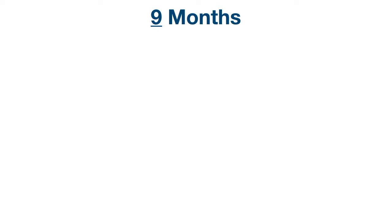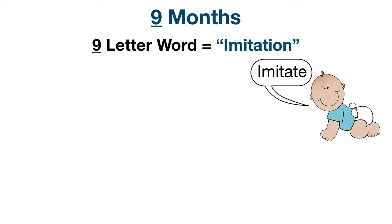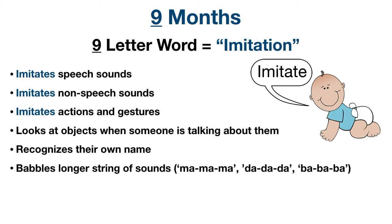Moving on to nine months — the nine-letter word to remember is 'imitation.' This is the start of the baby's imitation phase: they imitate speech and non-speech sounds, actions, and gestures. They may gesture by pointing to objects and showing them to others. They look at familiar objects when someone talks about them, start to recognize their own name, and their babbling increases with longer strings of sounds.